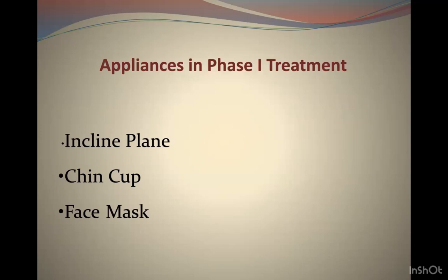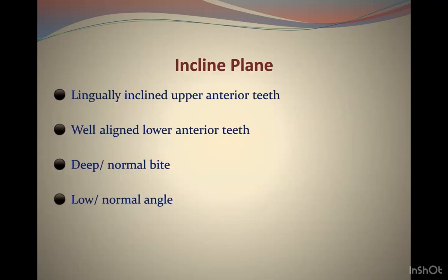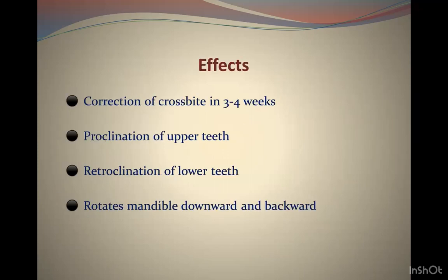In early phase, three types of appliances can be used: the inclined plane, chin cup, and face mask. The inclined plane is a dental appliance — not an orthopedic one. It is indicated when lower teeth are well inclined and upper anterior teeth are lingually inclined. It corrects crossbite in 3-4 weeks, produces proclination of upper teeth, retroclination of lower teeth, and rotates the mandible downward and backward, working on the occlusal plane angle.